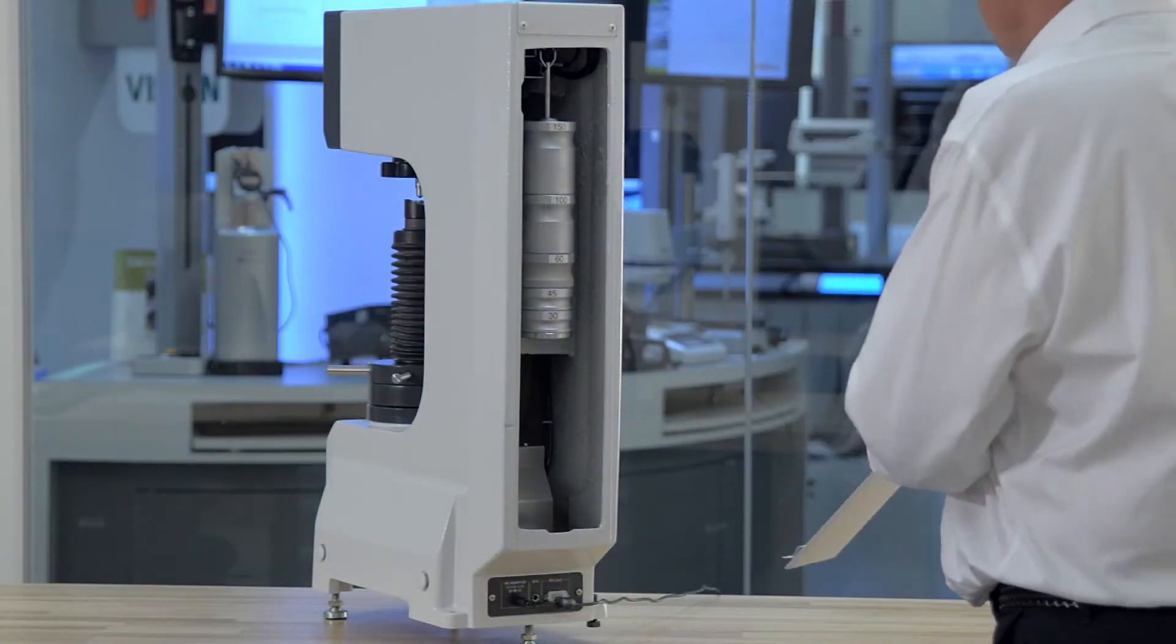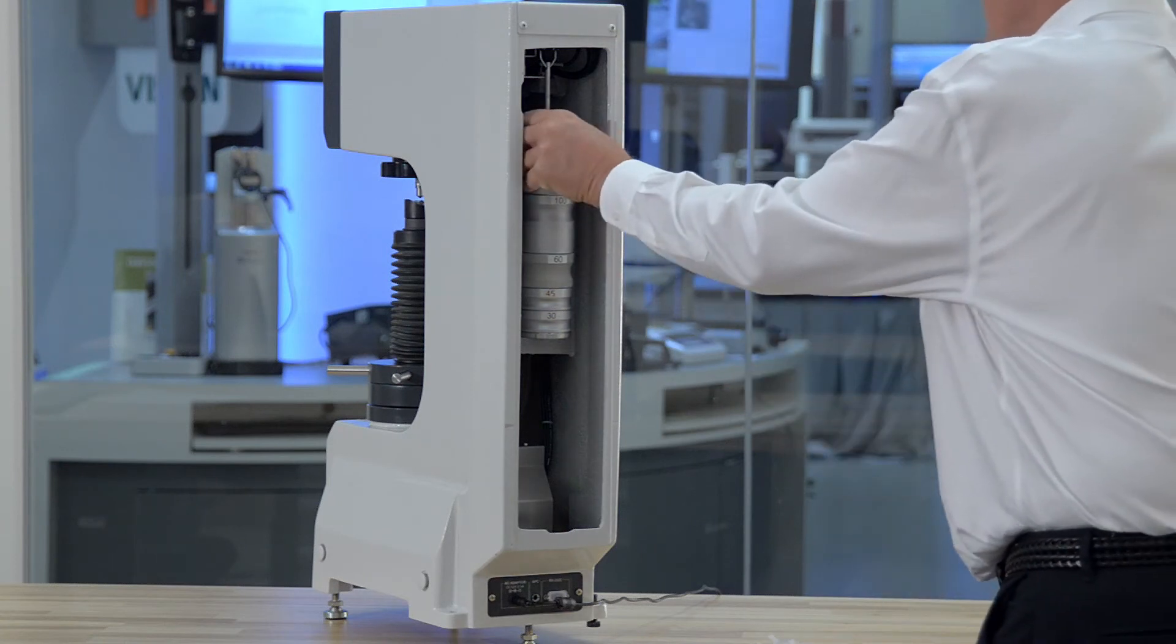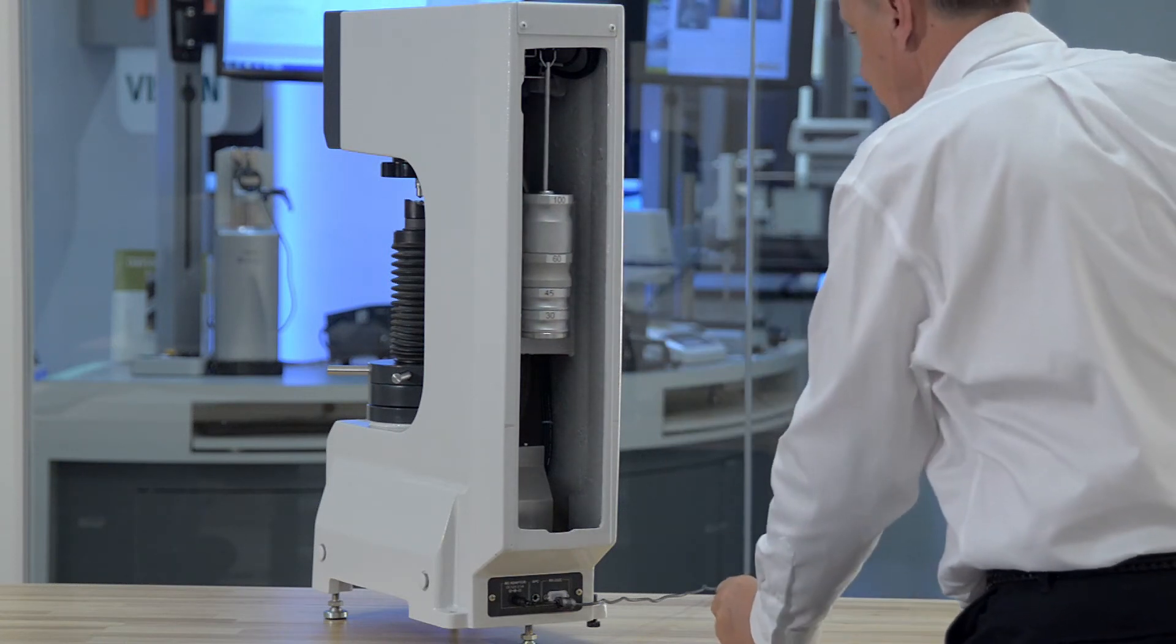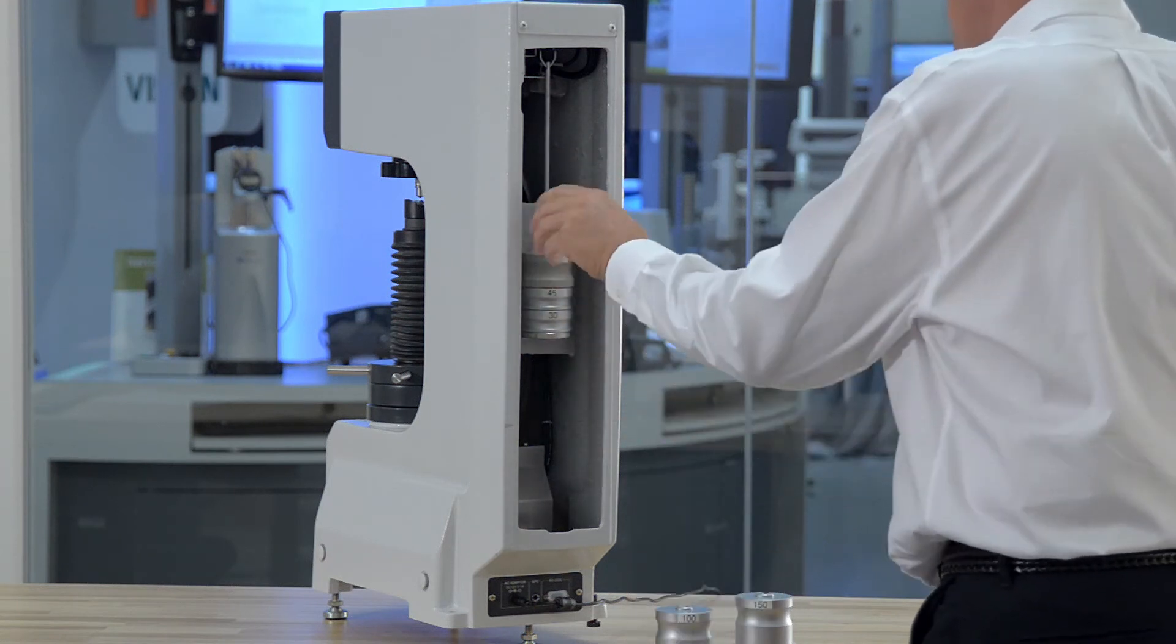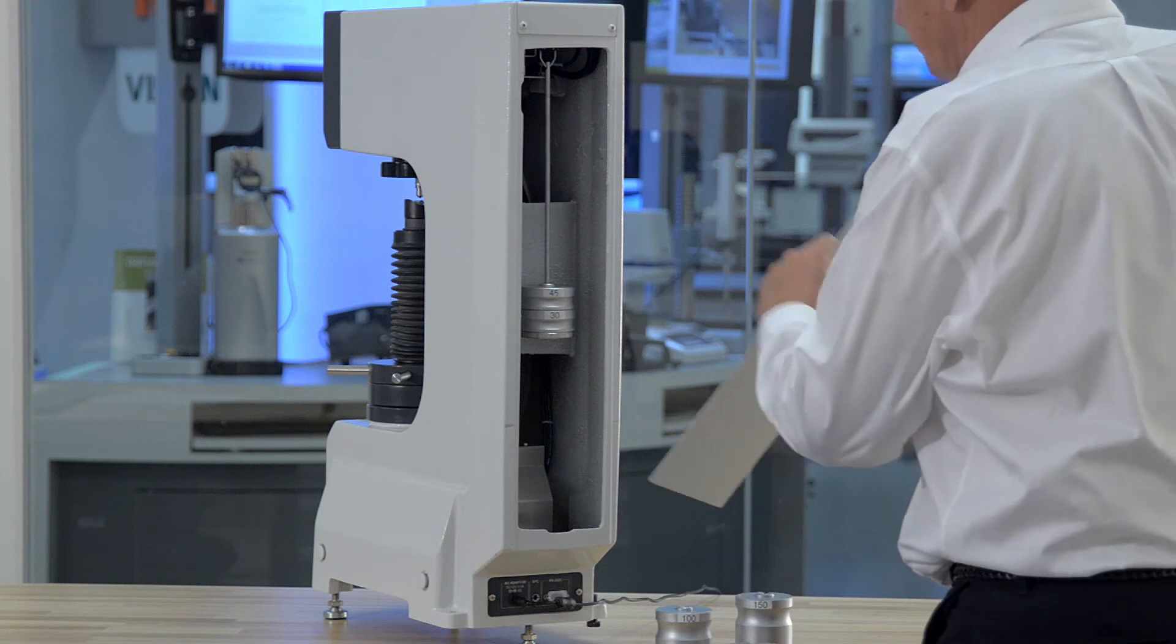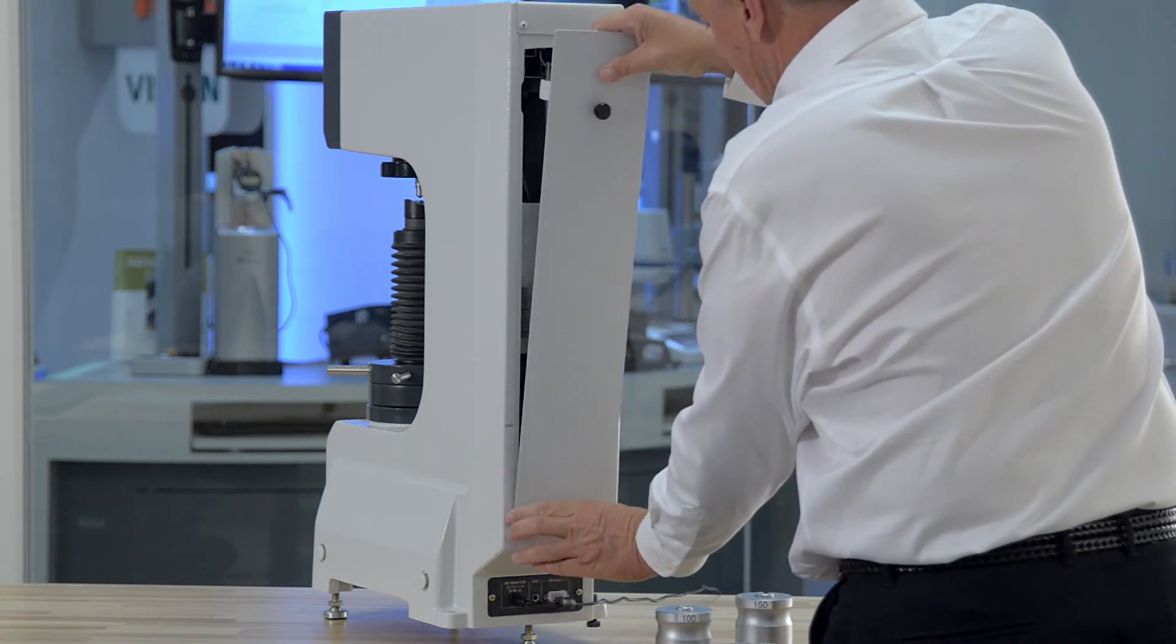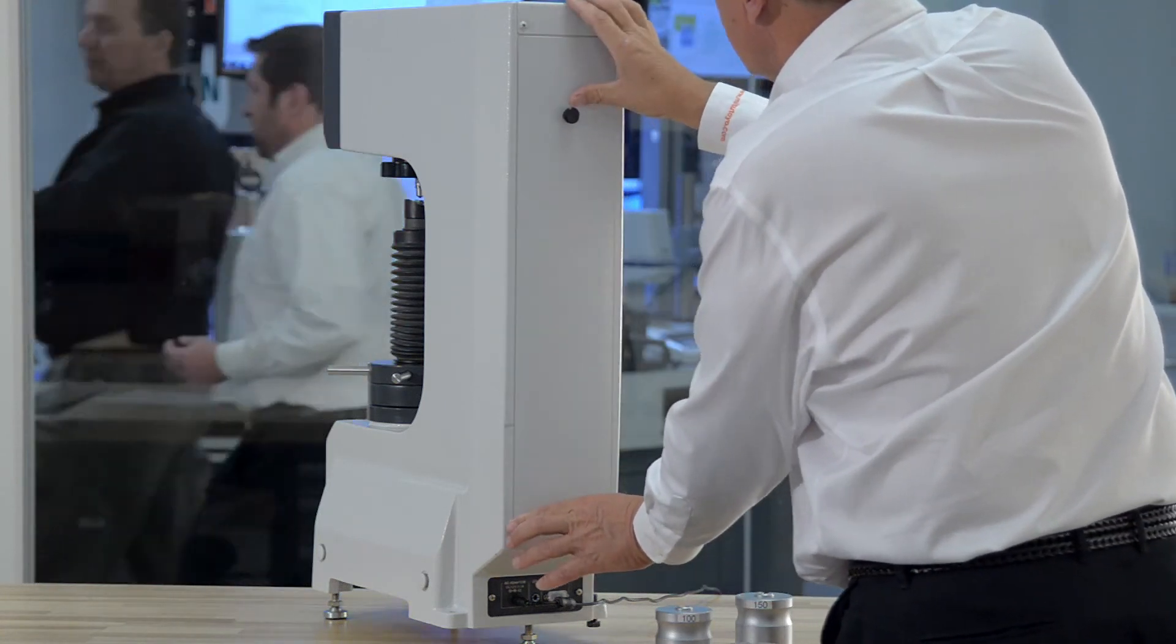Its twin tester design allows the operator to test on all 15 Rockwell scales and all 15 superficial scales when optional indenters are used. The adjustable hanging weight system is used to keep costs down and is a good option when you need a highly versatile tester for future testing requirements.